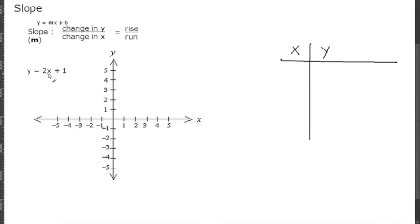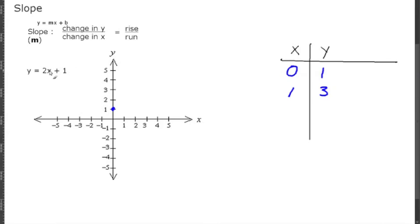In this equation we have y = 2x + 1. Plugging in 0 for x, we get y = 1, so we plot the point (0, 1). Plugging in 1 for x, we get 2 times 1 is 2 plus 1 is 3, so we plot (1, 3). We move over to the right 1 and up 3, and draw our line.